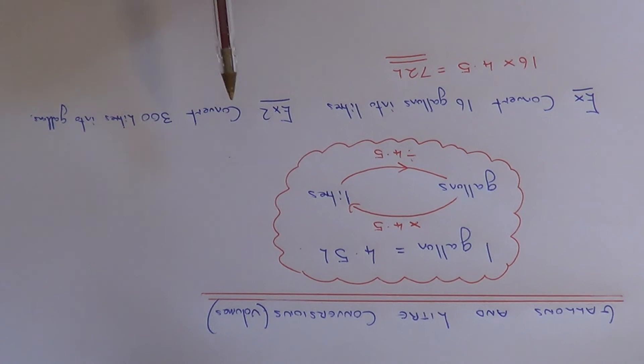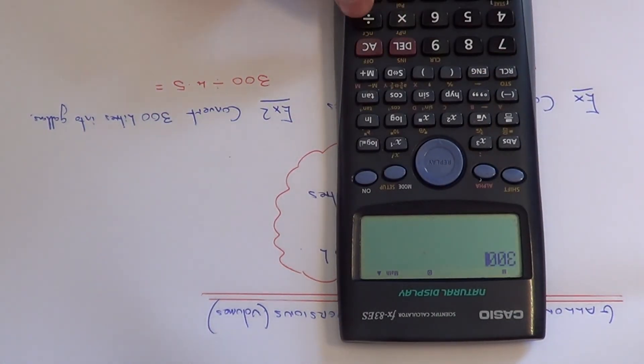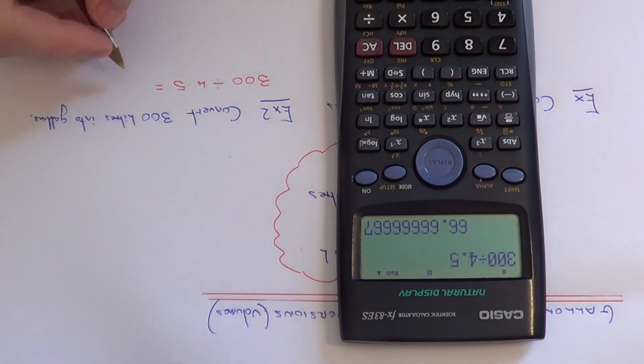So if we're converting litres into gallons we need to divide by 4.5. So we do 300 divided by 4.5. Again, just work this out on your calculator. If we do this one to the nearest whole, we get an answer of 67 gallons.